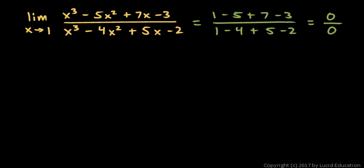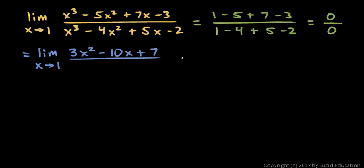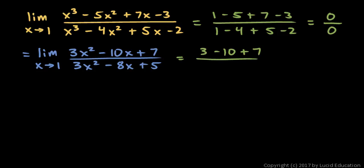L'Hôpital's rule says that we can evaluate this limit by taking the derivative of the numerator and the derivative of the denominator and trying the limit again. So this is equal to the limit as x approaches 1 of 3x squared minus 10x plus 7 over 3x squared minus 8x plus 5. When we substitute 1 in, we get 3 minus 10 plus 7 over 3 minus 8 plus 5, and the numerator and denominator both evaluate to 0 again.